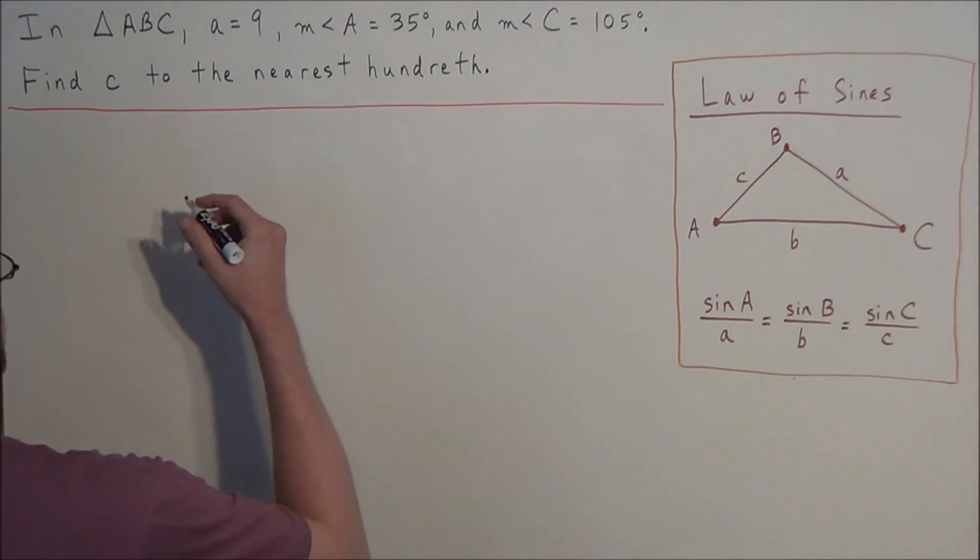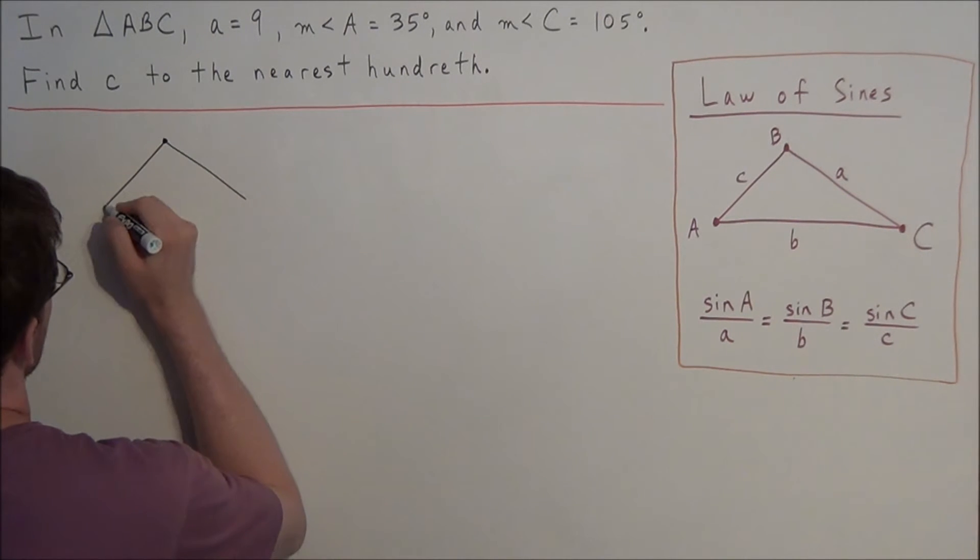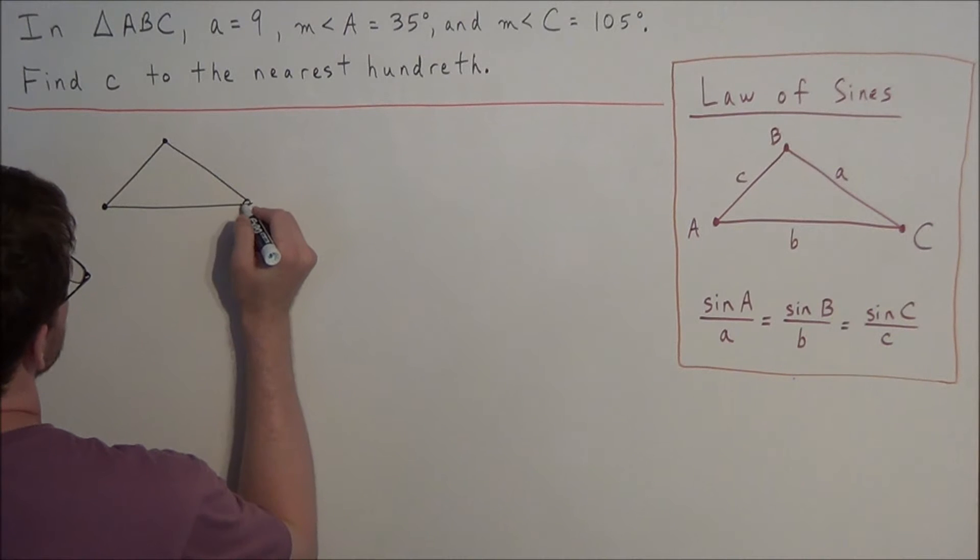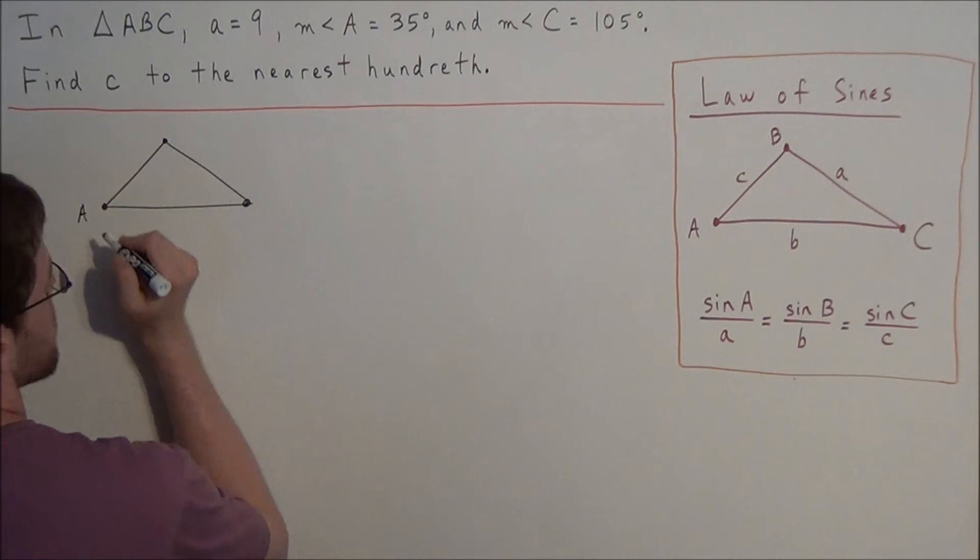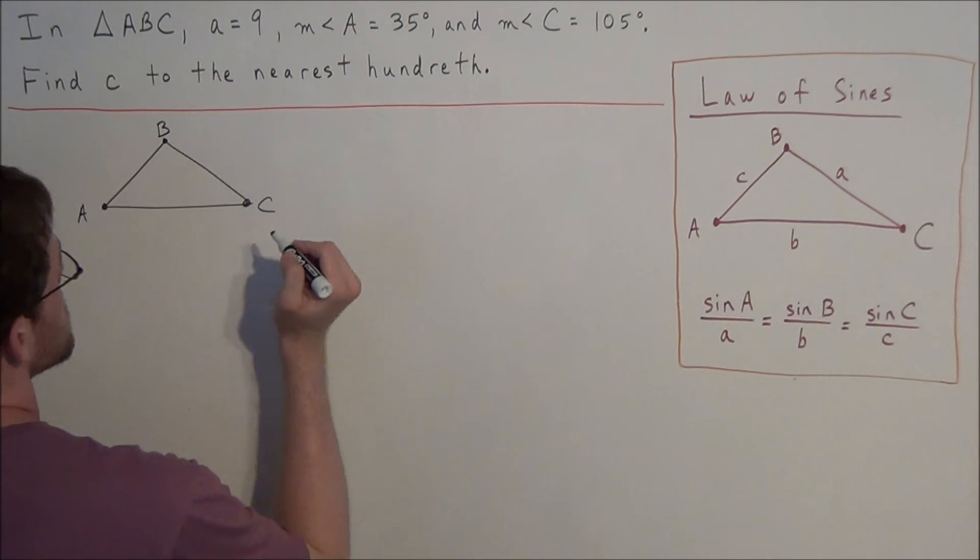So we can use this to solve this problem, but first we're going to draw a picture of what's going on in the problem. So we have triangle ABC. So we can label these vertices: we have vertex A, B, and C.